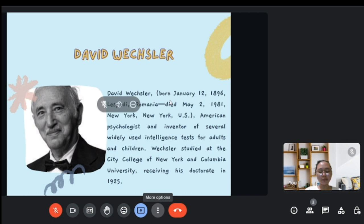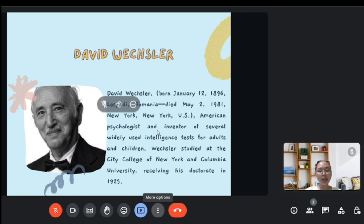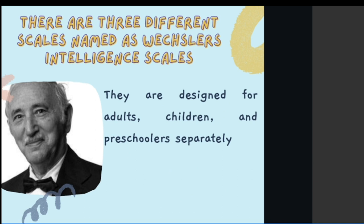David Wechsler was born on January 12, 1896 and he died on May 2, 1981 in New York. He was a psychologist and inventor of several widely used intelligence tests for adults and children. Wechsler studied at the City College of New York and Columbia University, receiving his doctorate in 1925.